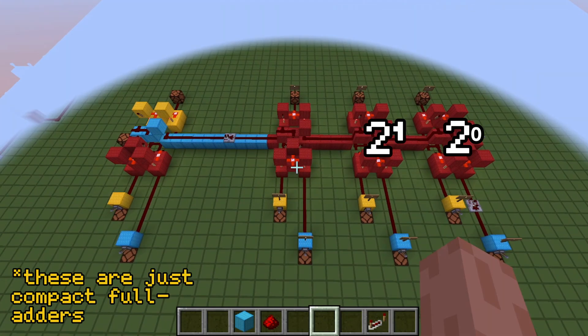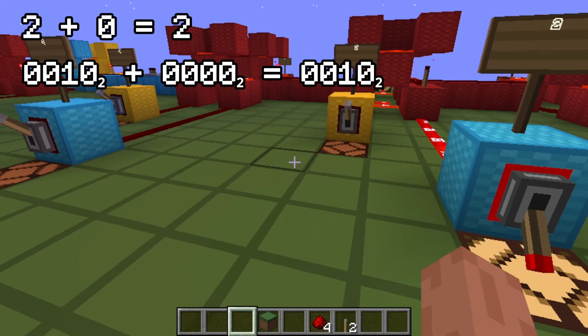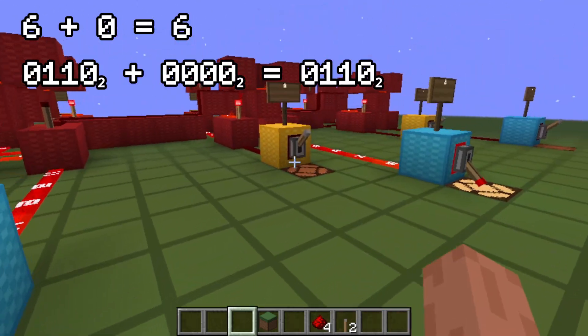When we connect full adders, we are essentially moving up the place value. Ripple carry adders are simple, but cause a delay because the carry has to pass through each adder sequentially.